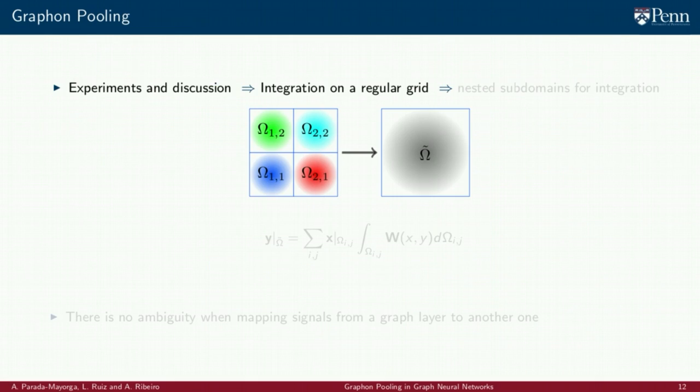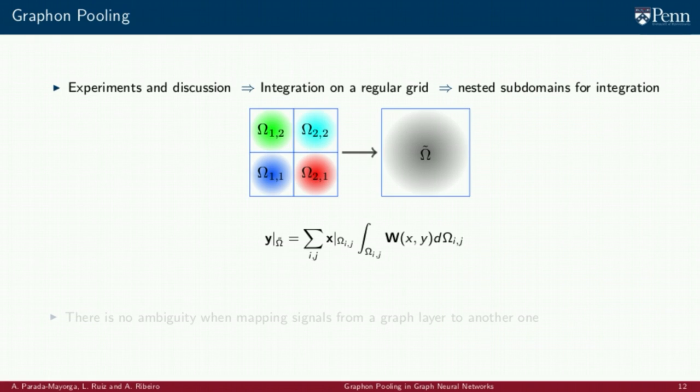For our discussion, we consider integration on nested regular grids as the method to generate the graphs from a given graphon. In this way, the value of a signal on a given subdomain of a coarser grid is associated to the values of the signal from a previous layer on the subdomains that intersect the current domain.